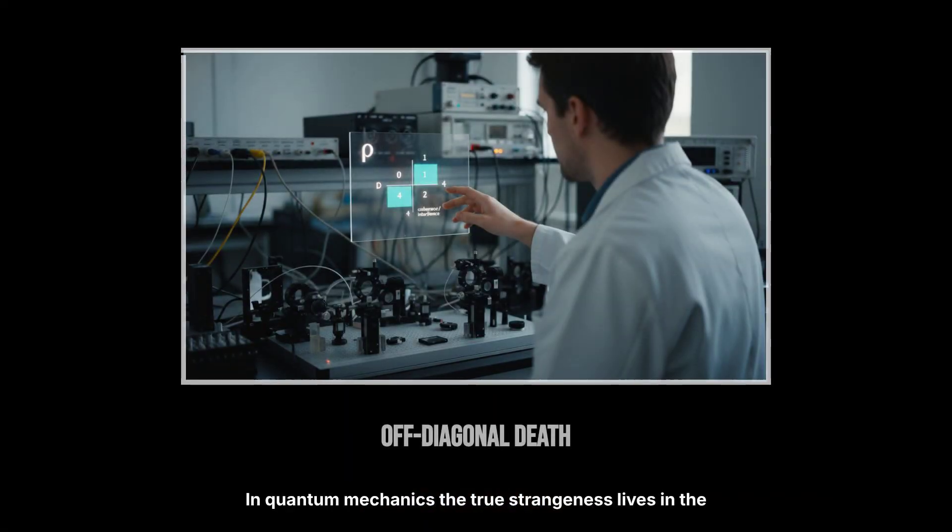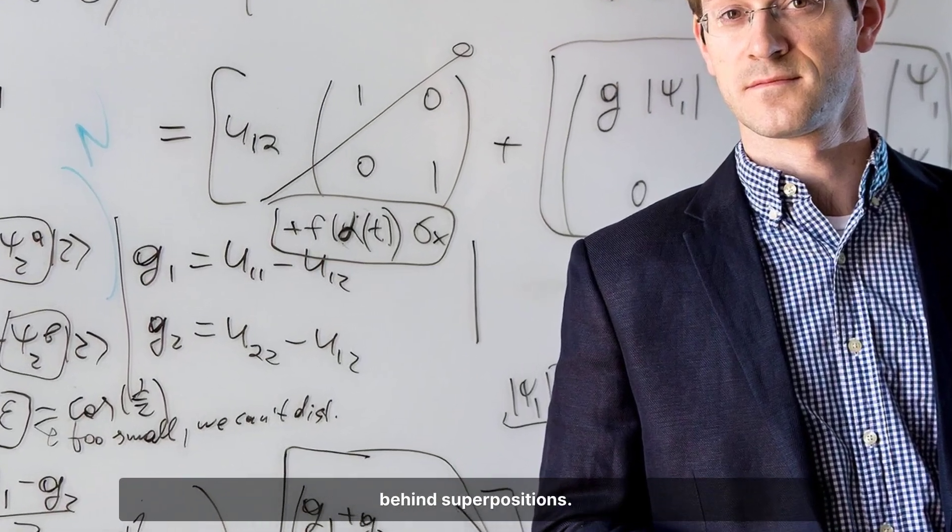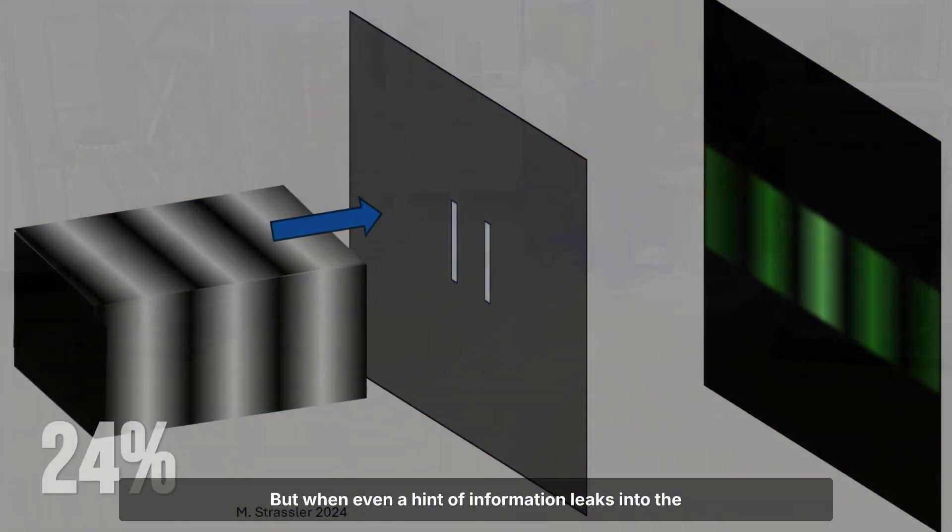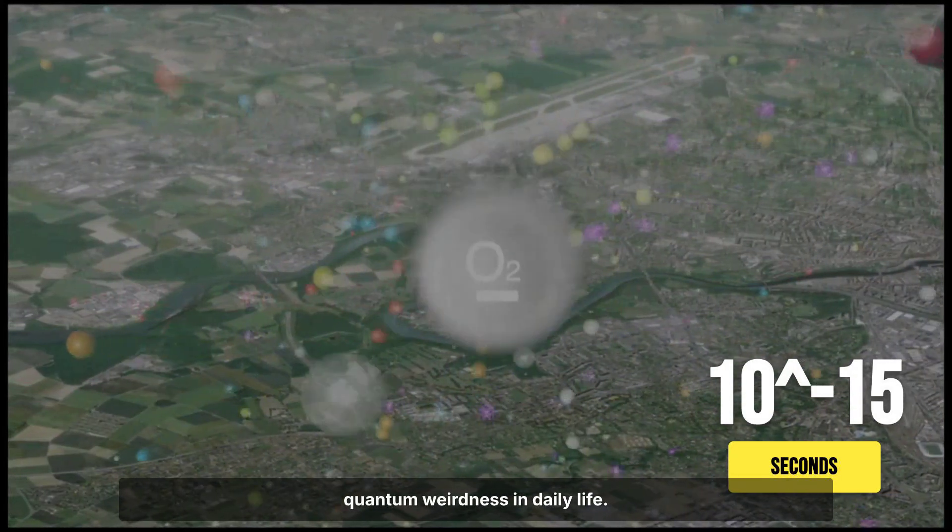In quantum mechanics, the true strangeness lives in the glowing off-diagonal terms of the density matrix, the math behind superpositions. But when even a hint of information leaks into the environment, the numbers that make interference possible collapse to zero at speeds so staggering that you never see quantum weirdness in daily life.